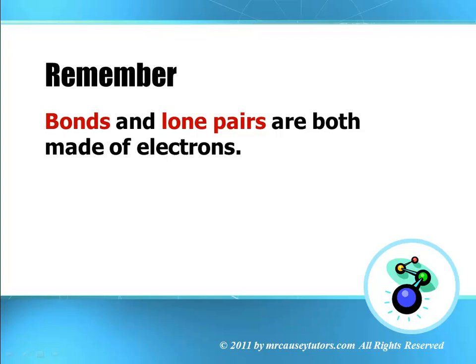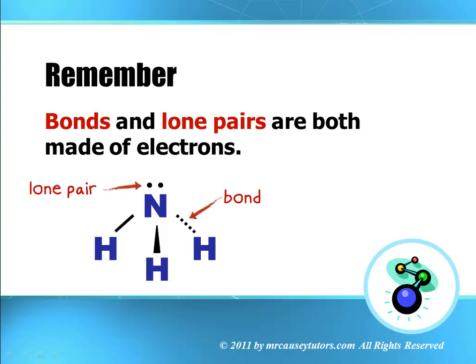Remember bonds and lone pairs are both made of electrons, and that means they're both negative regions.